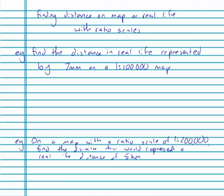Start by writing map to real life. Put your ratio scale in. Put the value they gave us in the correct spot—7mm on the map—and we want to know what that would be in real life.